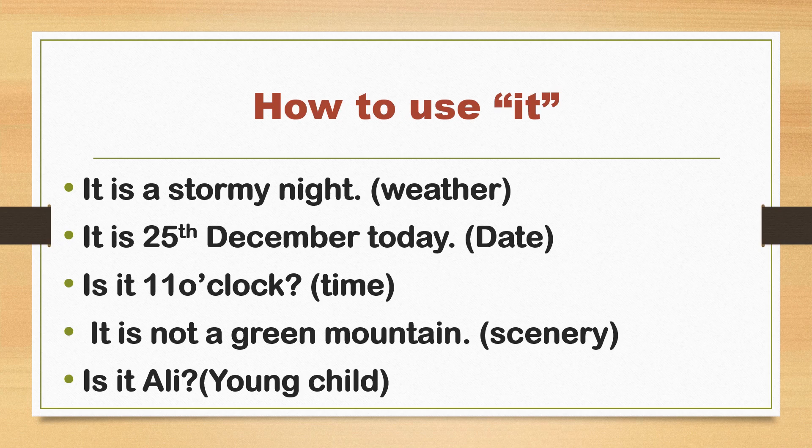'It is a stormy night.' This shows using 'it' to describe weather or natural scenery. 'It is 25th December today.' This is an example of using 'it' for a date.